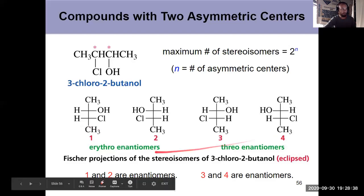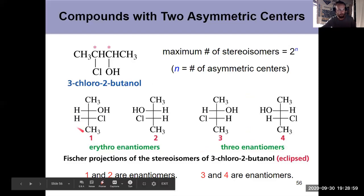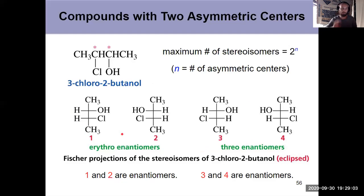And the erythro is where the hydrogens are on the same side. That's why these are called erythro. Hydrogens on the same side. And the threo has the hydrogens on opposite sides. You can kind of think about it as going through the molecule. Hydrogens are on opposite sides. But notice, for each of those sets of enantiomers, they are mirror images. So you've got a set of enantiomers. So four stereoisomers, two pairs of enantiomers.